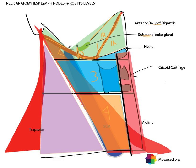Robbins level two is on the other side of that posterior border of the submandibular gland. It's bounded inferiorly by the projection from the inferior border of the hyoid and extends up to the base of the skull. It can be subdivided into 2A and 2B, with the subdivision being the spinal accessory nerve — 2A is on its medial side and 2B on its lateral side. Level two is the level most frequently associated with head and neck malignancies.